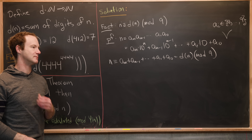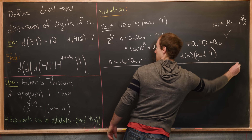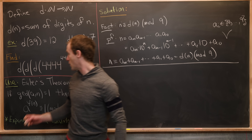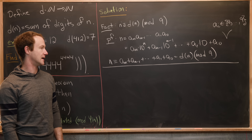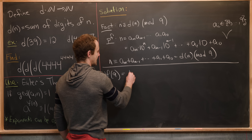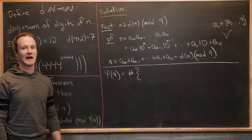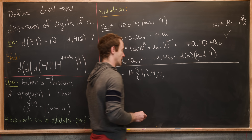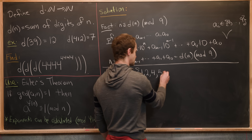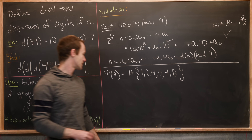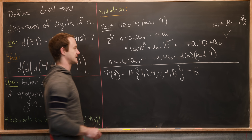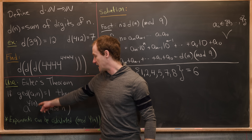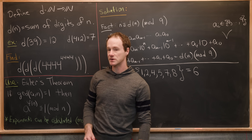Now let's calculate 4444^4444 mod 9. First, φ(9) counts numbers from 1 to 9 relatively prime to 9: those are 1, 2, 4, 5, 7, 8 — giving φ(9) = 6. We perform division with remainder: 4444 = 9·493 + 7, so 4444 ≡ 7 mod 9. And 4444 = 6·740 + 4, so 4444 ≡ 4 mod φ(9) = 6. By Euler's theorem and properties of congruences, 4444^4444 ≡ 7^4 mod 9.